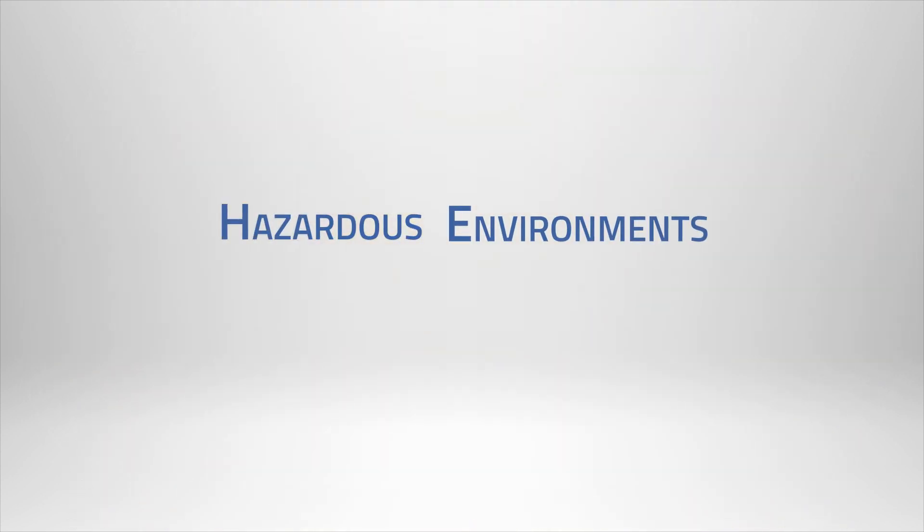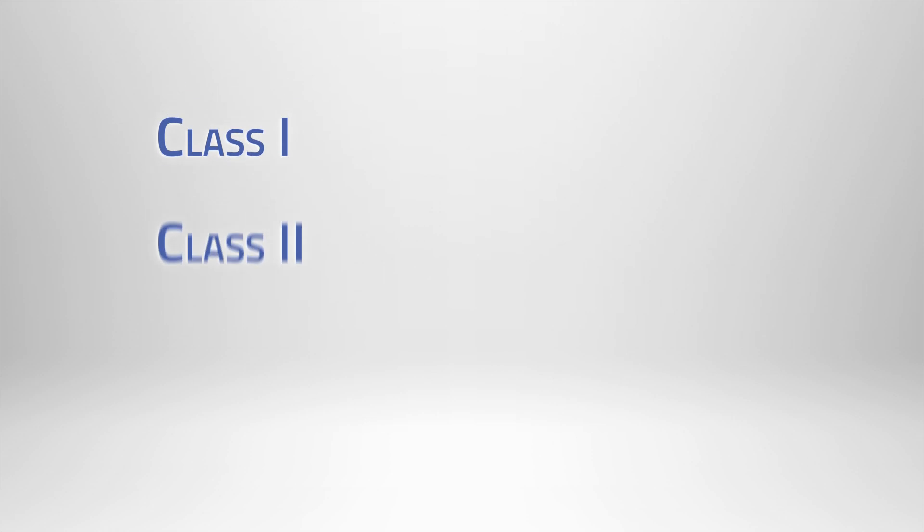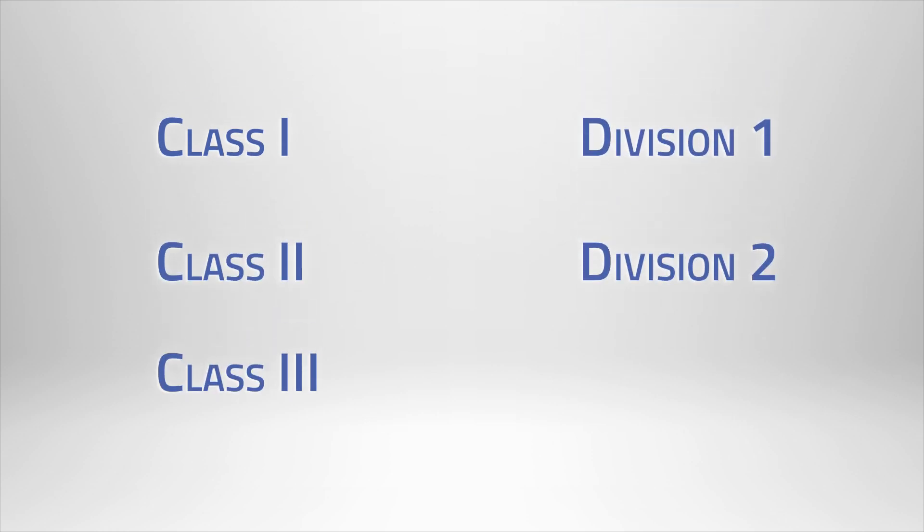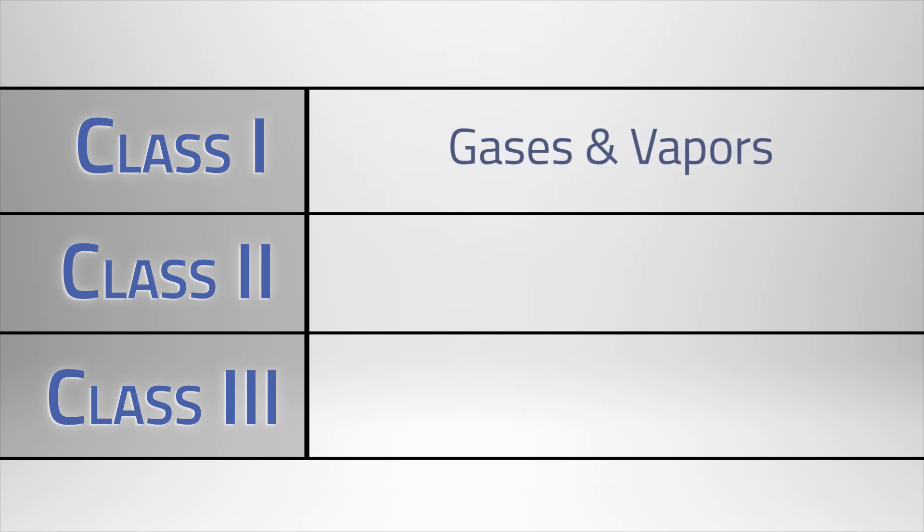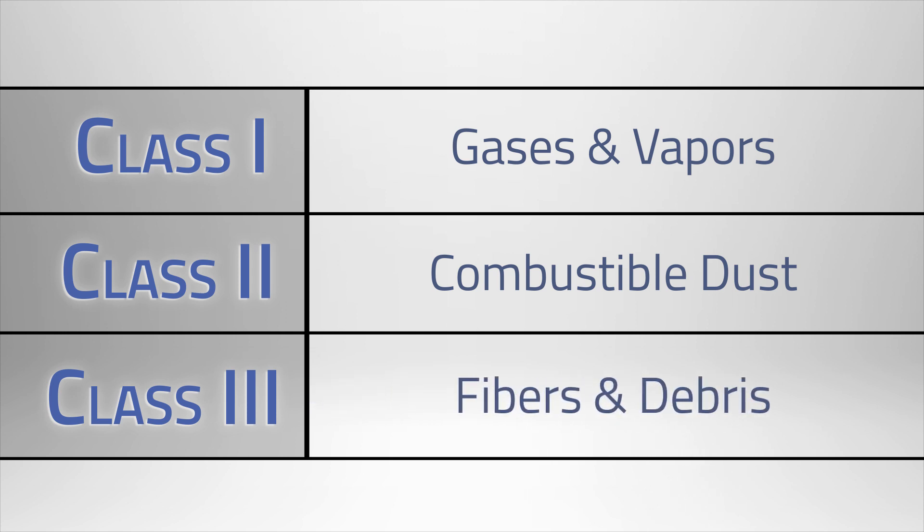Now what makes an environment hazardous? There are three classes and two divisions of hazardous environments. A Class 1 hazardous environment contains gases and vapors. A Class 2 environment contains combustible dust. And a Class 3 environment contains fibers and flying debris.